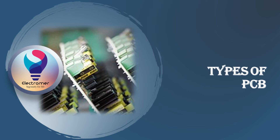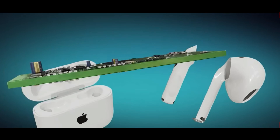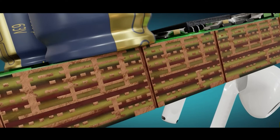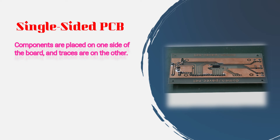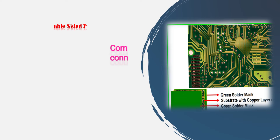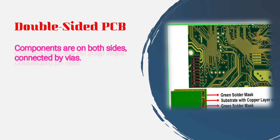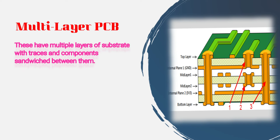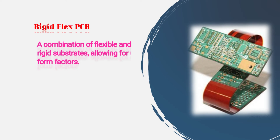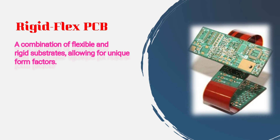There are several types of PCBs, each designed for specific applications. Single-sided PCBs: components are placed on one side of the board, and traces are on the other. Double-sided PCBs: components are on both sides, connected by vias. Multi-layer PCBs: these have multiple layers of substrate with traces and components sandwiched between them. Rigid-flex PCBs: a combination of flexible and rigid substrates, allowing for unique form factors.